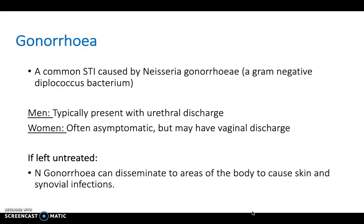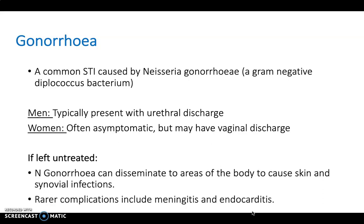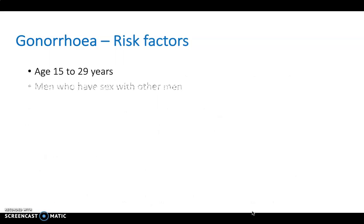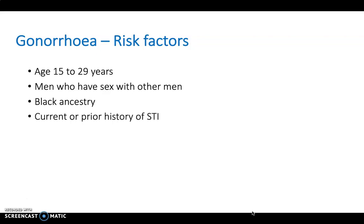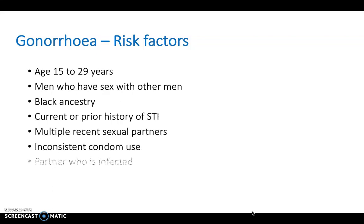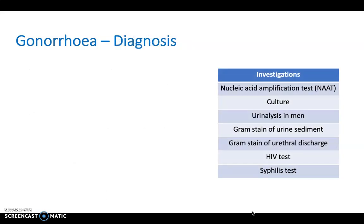If gonorrhea is left untreated, Neisseria gonorrhoeae can disseminate to cause skin and synovial infections, and rarer complications can include meningitis and endocarditis. Risk factors are fairly similar to chlamydia, with an at-risk age group of 15 to 29, men who have sex with men, black ancestry, current or prior history of an STI, multiple recent sexual partners, inconsistent condom use, an infected partner, and a history of sexual or physical abuse.